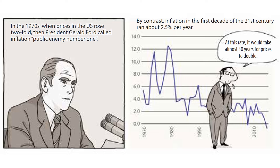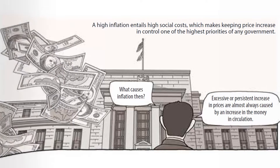In the 1970s, when prices in the U.S. rose twofold, then-President Gerald Ford called inflation public enemy number one. By contrast, inflation in the first decade of the 21st century ran about 2.5 percent per year — at this rate, it would take almost 30 years for prices to double.